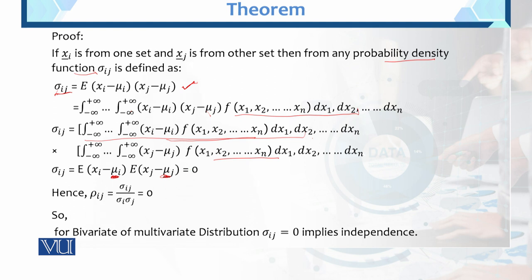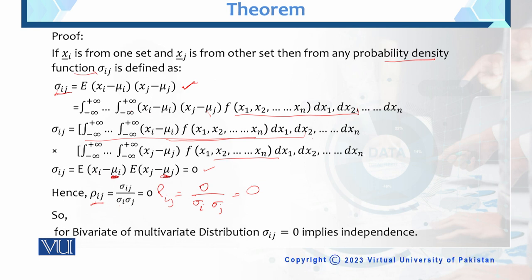Now finding the correlation: if covariance is zero, then basically you know that correlation will also be equal to zero. This is the definition of correlation, which equals covariance divided by the standard deviation of the ith and the standard deviation of the jth. Since covariance is zero, this value is zero divided by sigma_i times sigma_j. So the correlation of ij is also equal to zero. Hence, subset ki covariance zero hai, toh overall individual variable ki covariance bhi zero hai, aur subset ki covariance bhi zero ke equal ho gai.